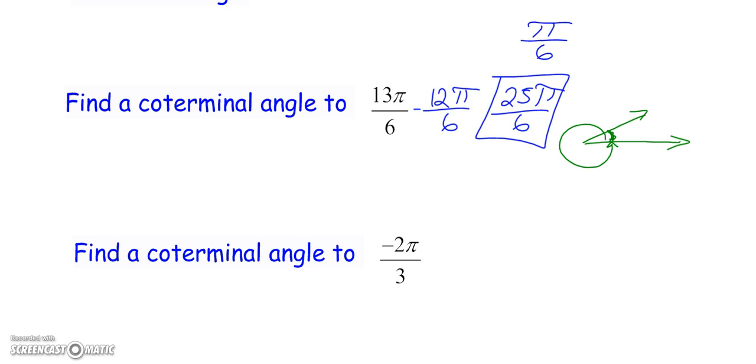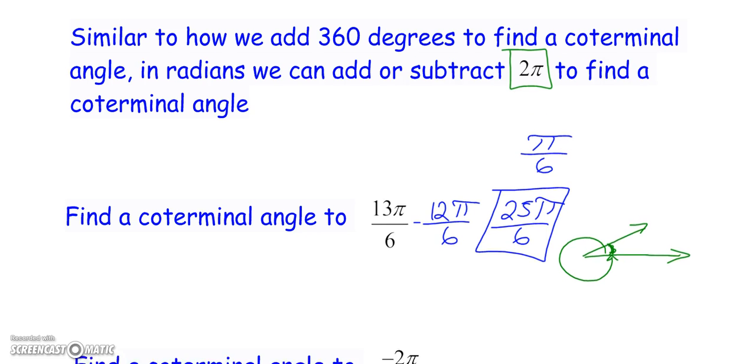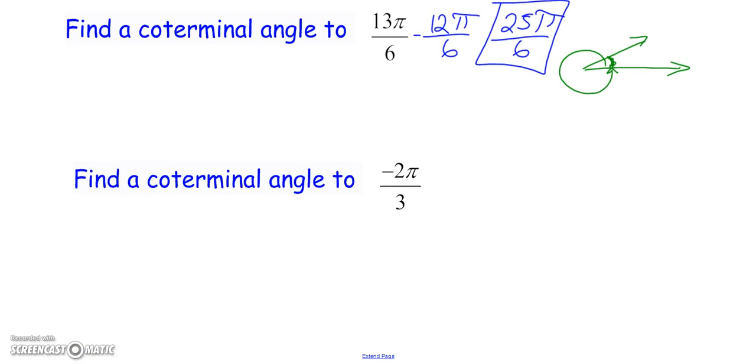We are already a little familiar with π over 6 in previous slides. We know that falls in quadrant 1. So finding coterminal angles is really just a fancy way of saying you either have to add 2π or subtract 2π. I'll let you experiment on the second one and see if you can find some coterminal angles on your own.